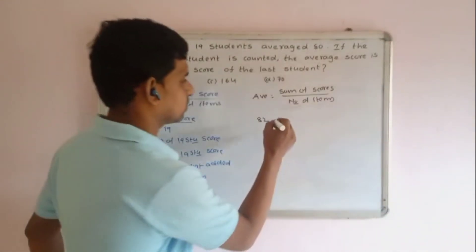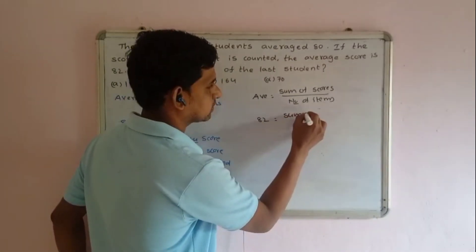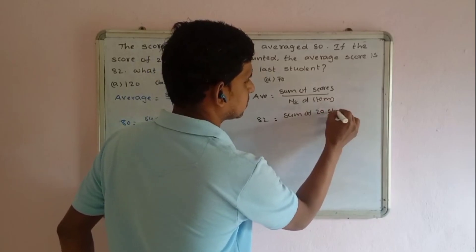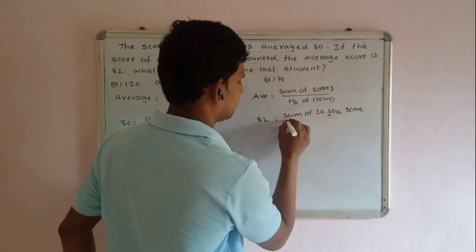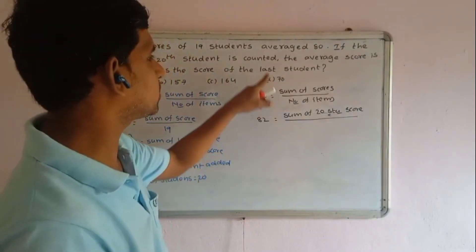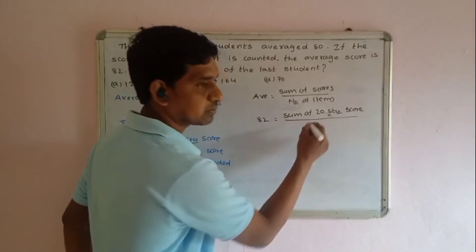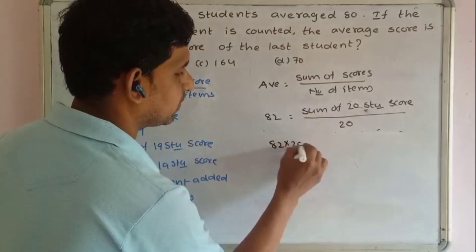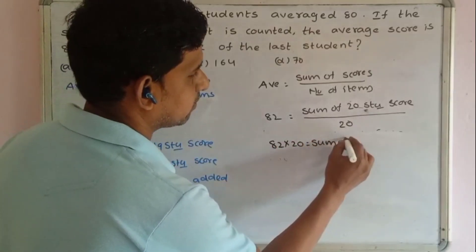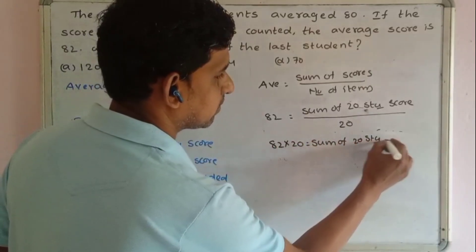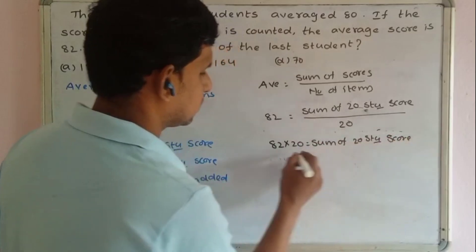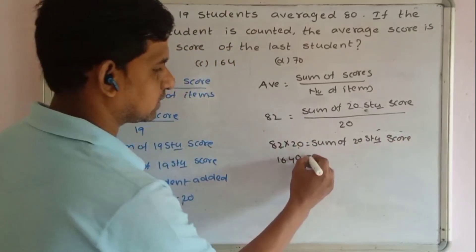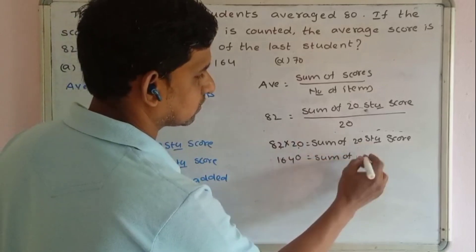Now for 20 students: sum of 20 students' scores divided by number of items equals the new average. How many students? 20 students. The new average is 82. So 82 multiplied by 20 gives the sum of 20 students' scores, which equals 1640.